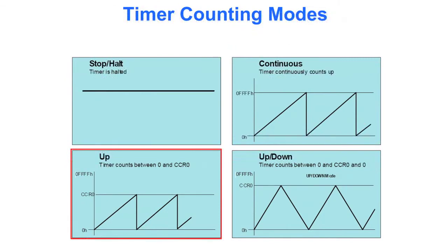The timer has several different counting modes. Continuous, where the timer just continually counts up from 0 to its maximum value and then goes over from there. Up, where it counts from 0 up to the value that you've put in counter-compare register 0.